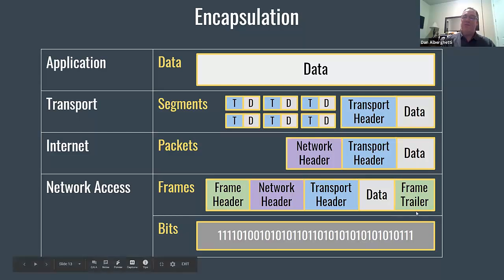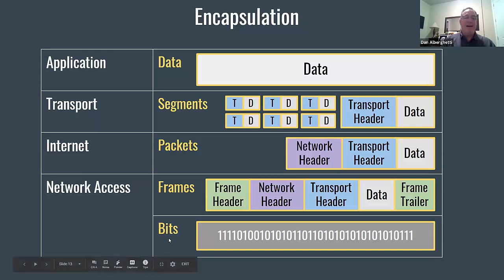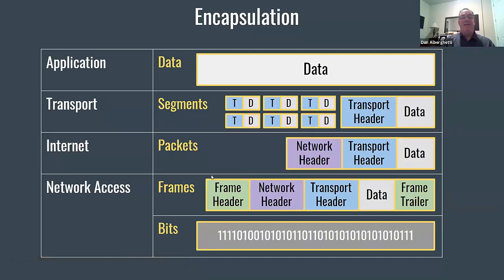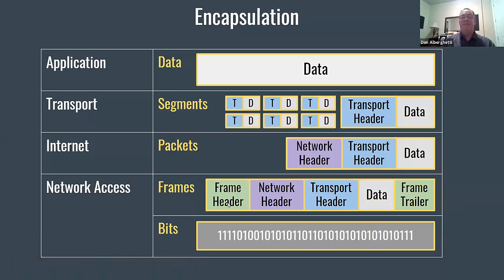In the Ethernet frame, a trailer is also added containing a hash for error checking. At the physical layer, everything gets turned into bits — ones and zeros. The data becomes a segment, each segment gets wrapped into a packet, the packet into a frame, and the frame into bits, with headers added at each step. This addressing is what enables data to travel across the internet and reach its destination — just like a letter can't reach its destination without a name, address, and zip code.